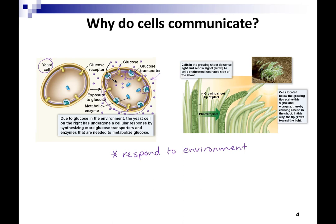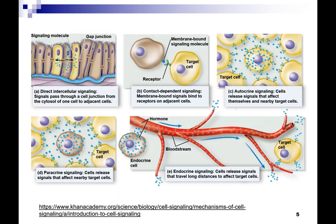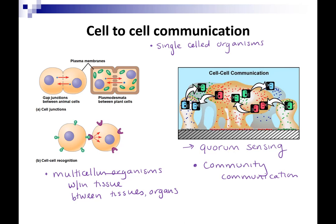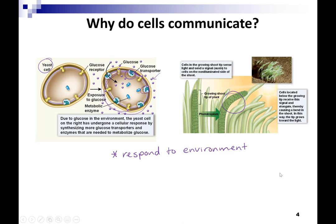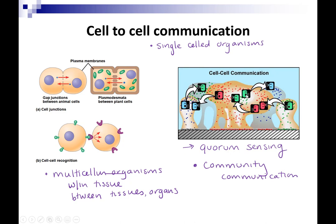We'll talk about what happens internally when cells are communicating, but first the external. The cells of a plant will actually grow at different sizes — there are little cells here and longer cells here — which allows the whole multicellular shoot of the plant to bend and grow towards the light. Another response to the environment. Also quorum sensing is a community responding to the environment.